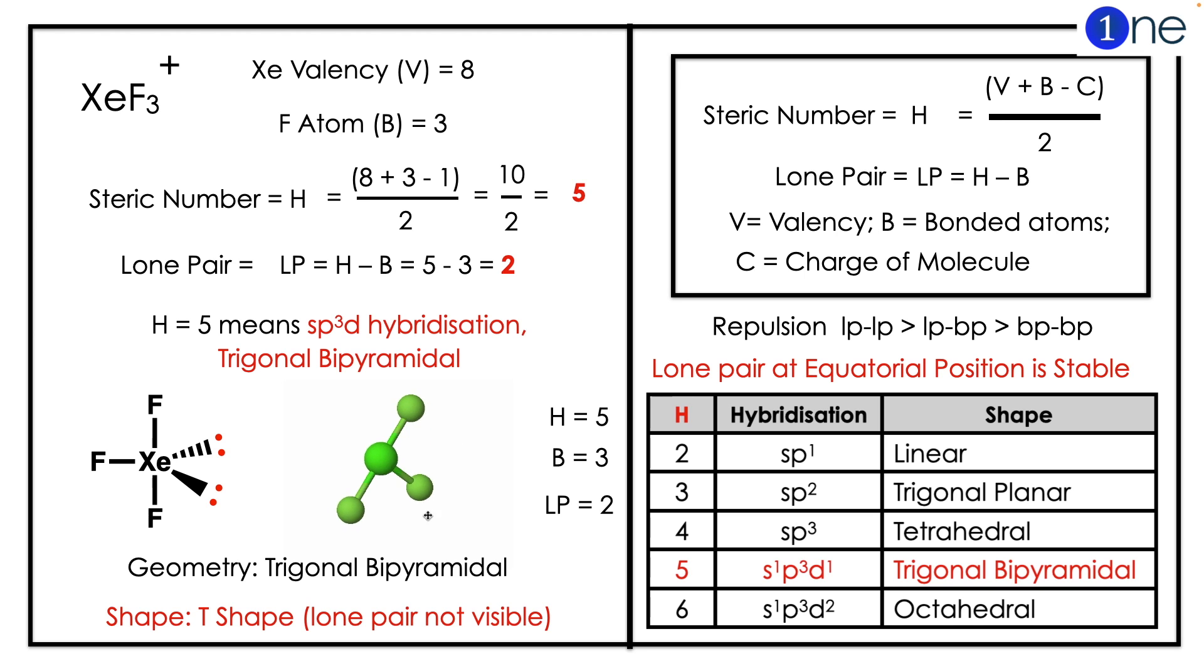So if you substitute in the formula, fluorine atoms are 3, so the total number will be 8 plus 3, and charges will be plus 1, this minus 1, whole divided by 2 gives 5.